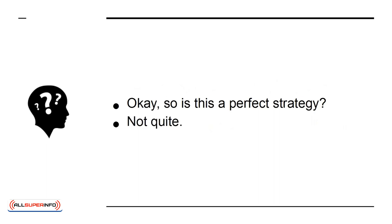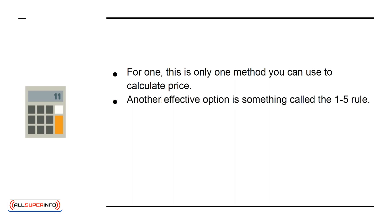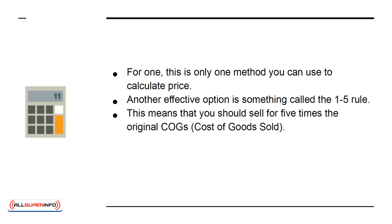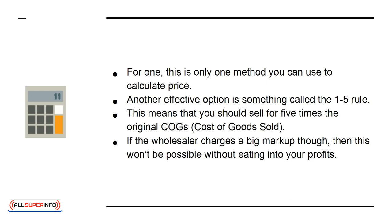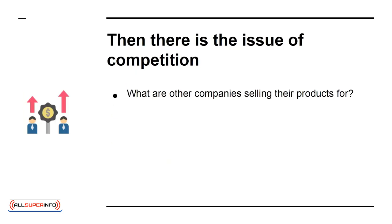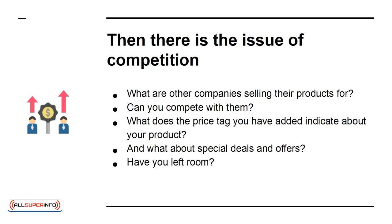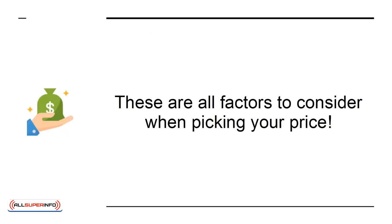So is this a perfect strategy? Not quite. For one, this is only one method you can use to calculate price. Another effective option is something called the 1-to-5 rule, which means that you should sell for 5 times the original COGs — cost of goods sold. If the wholesaler charges a big markup though, this won't be possible without eating into your profits. Then there is the issue of competition: what are the other companies selling their products for? Can you compete with them? What does the price tag you've added indicate about your product? And what about special deals and offers — have you left room? These are all factors to consider when picking your price.